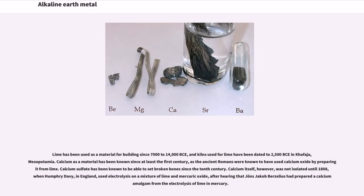Lime has been used as a material for buildings since 7,000 to 14,000 BCE, and kilns used for lime have been dated to 2,500 BCE in Kefalonia, Mesopotamia. Calcium as a material has been known since at least the first century, as the ancient Romans were known to have used calcium oxide by preparing it from lime. Calcium sulfate has been known to be able to set broken bones since the 10th century. Calcium itself, however, was not isolated until 1808, when Humphrey Davy in England used electrolysis on a mixture of lime and mercuric oxide, after hearing that Jöns Jacob Berzelius had prepared a calcium amalgam from the electrolysis of lime and mercury.